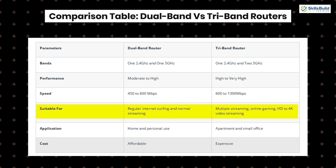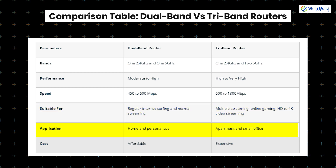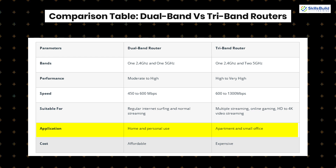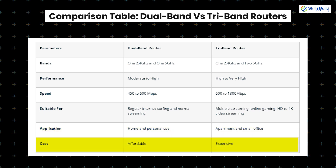For dual-band, regular internet browsing and normal streaming is considered good. In terms of application, you can use tri-band routers for large homes and small offices, while dual-band is best for home and personal use. In terms of cost, tri-band is a bit expensive, but dual-band is affordable.